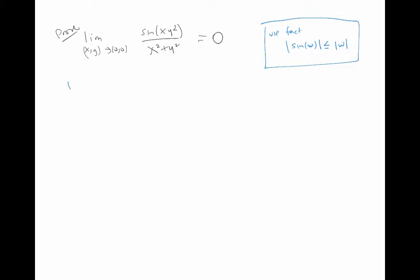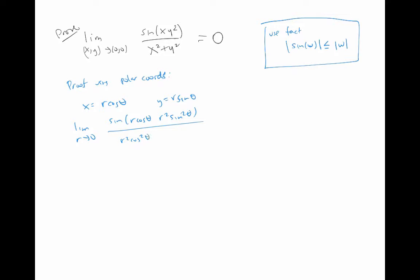So first, let's do a proof using polar coordinates. Let x equal r cosθ and y equal r sinθ. We look at the limit as r goes to zero of sine of r cosθ times r² sin²θ, over r² cos²θ plus r² sin²θ. That simplifies to the limit as r goes to zero of sine of r³ cosθ sin²θ divided by r squared.